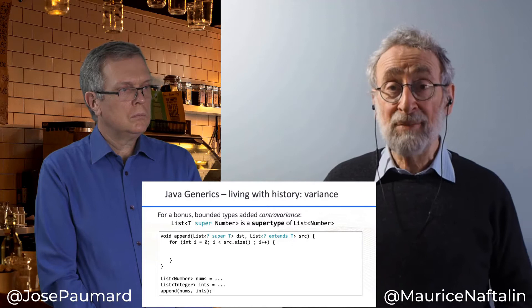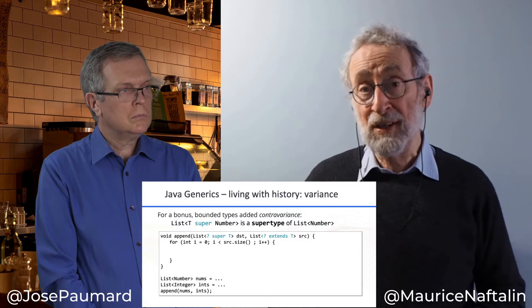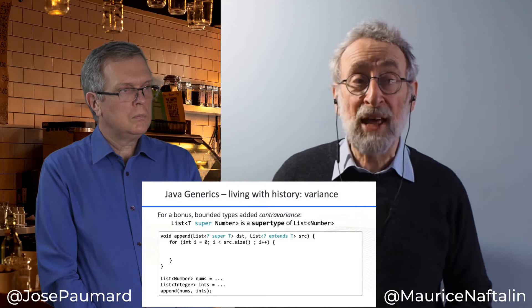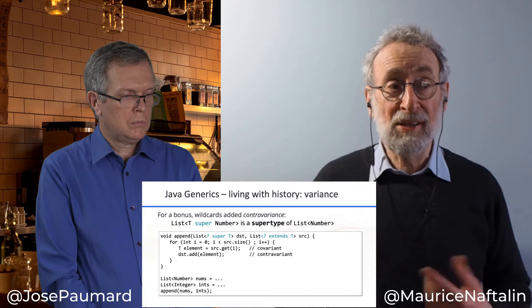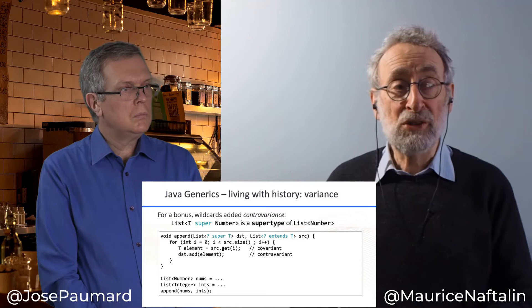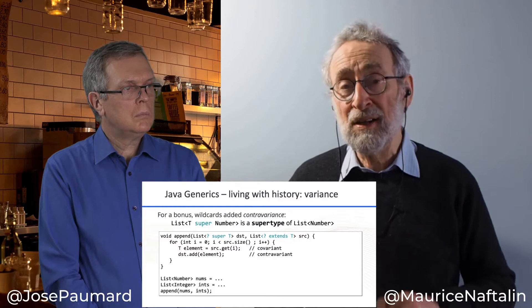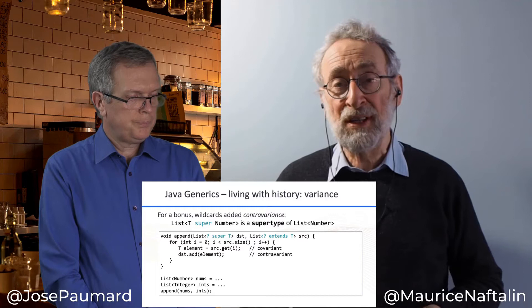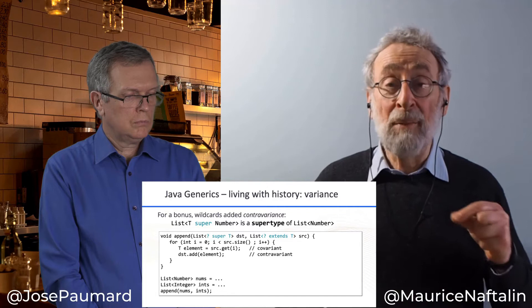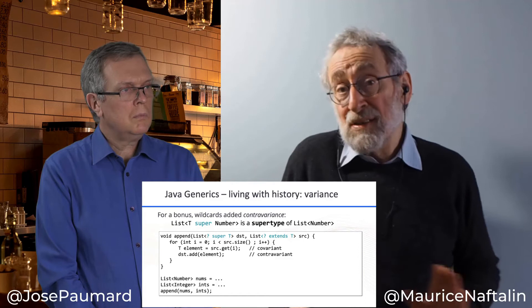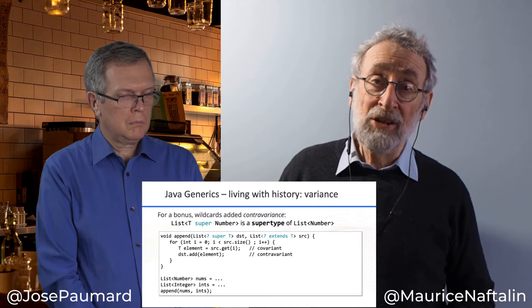To demonstrate this, we have an append method which takes a covariantly defined source list and puts its values into a contravariantly defined destination list. The body of the loop steps over each source element, retrieving it from the covariant container and putting it into the contravariant destination. Therefore we can write a call on append that takes a List of Integer and appends them to a List of Number. These are some of the problems and the ways they were overcome in Java for the introduction of generics.